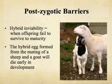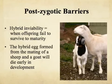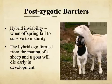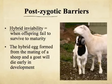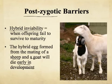Those were all barriers that prevented the formation of a zygote. However, sometimes individuals are able to mate successfully, but their offspring are not viable or not fertile — these are postzygotic barriers. The first is hybrid inviability: the zygote forms but the offspring fails to survive to maturity. For example, if you mated a sheep and a goat, the zygote would form, but that baby would never be born — the zygote would die very early in development.